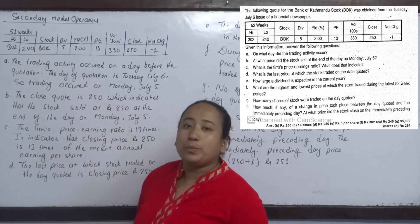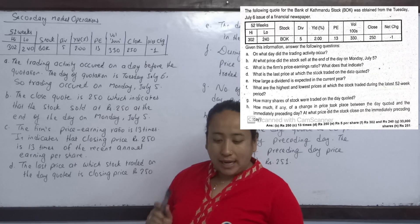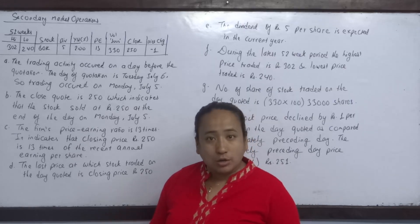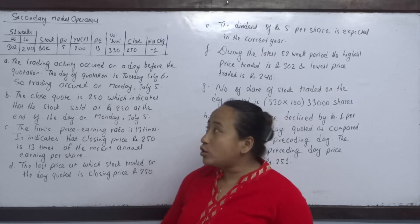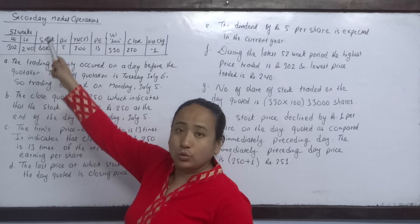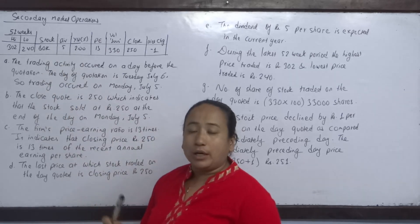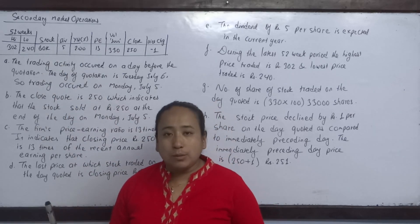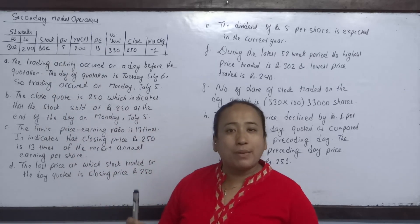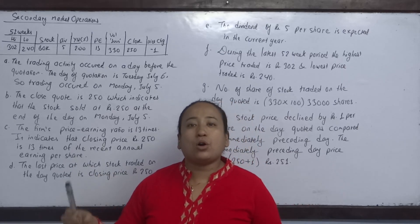Stock BOK — Bank of Kathmandu stock. You can also sell Bank of Kathmandu stock. Dividend: as you can see, expected dividend. When you buy the company, how much dividend? 5,000 dividend per share.